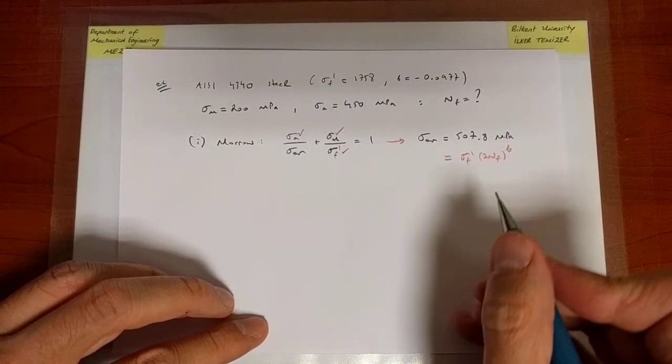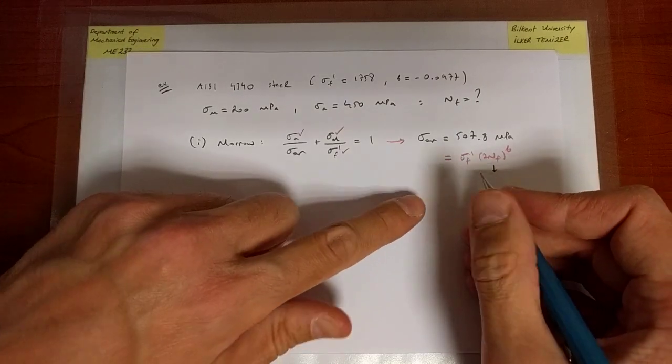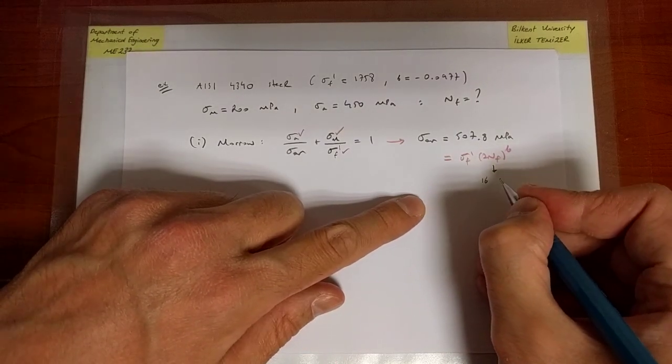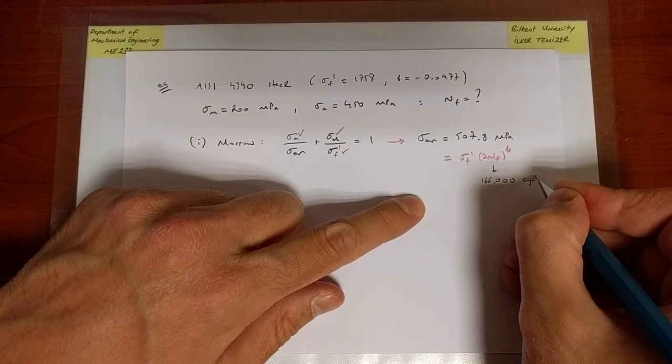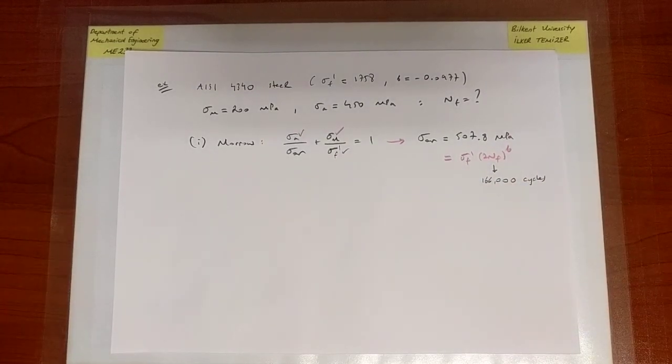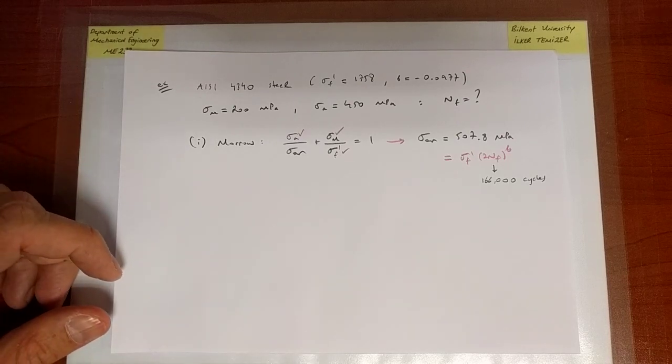And here, I know sigma f prime and b, and so I can solve for nf and find that it's equal to 160,000 cycles. So that is the solution based on Merrill relation.